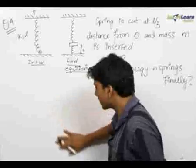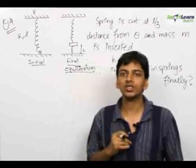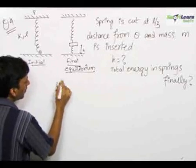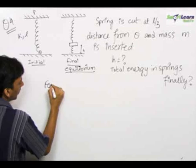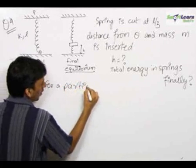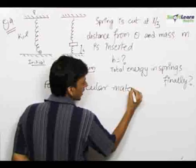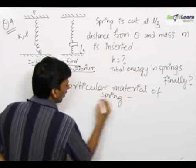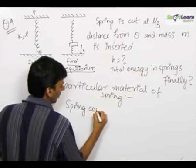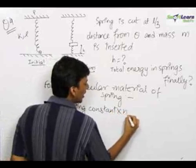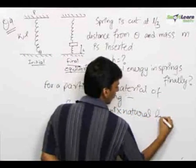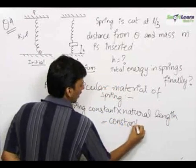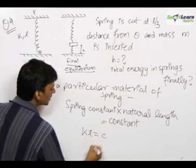Whenever springs are cut, always remember the spring constant of the remaining springs changes. It changes according to the rule for a particular material of the spring: the spring constant times the natural length is always equal to a constant. We write this as k × L = c.